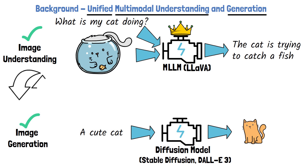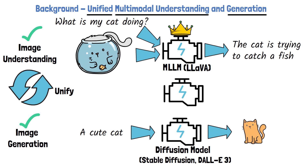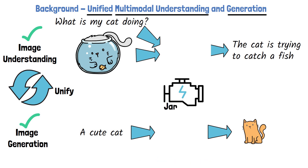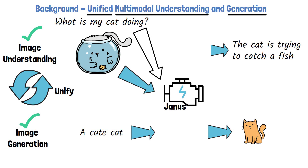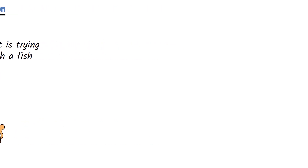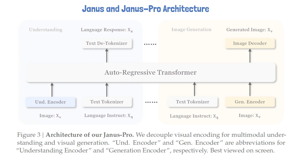We already have capable models for both image understanding and image generation. However, there are significant benefits to unifying these tasks into a single model. For instance, using one unified model saves the need of loading different models' weights when our application requires both types of tasks. The Janus model unifies the handling of both tasks within a single architecture. While Janus is not the first attempt to achieve this unification, we'll explore what methods make Janus more successful when we review its architecture.